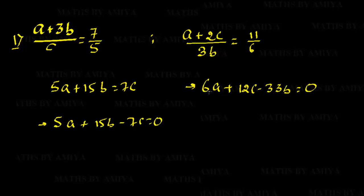How do we find the ratio? First, we eliminate A and find a relation between B and C. Then we eliminate B and find the relation between A and C, and merge the ratios. But that would be cumbersome work — eliminating one, solving for another, then eliminating again and solving for B and C, then eliminating and solving for A and C or A and B, then merging the ratio — that would be a tough task. For this, we are going to use the determinant method.